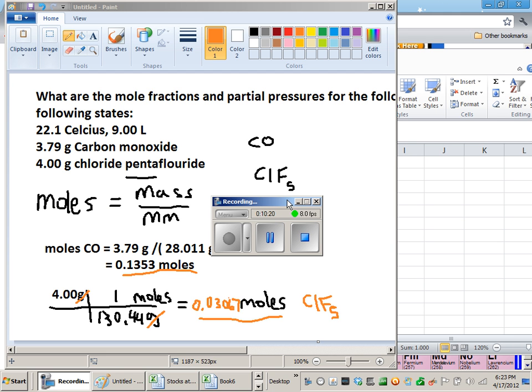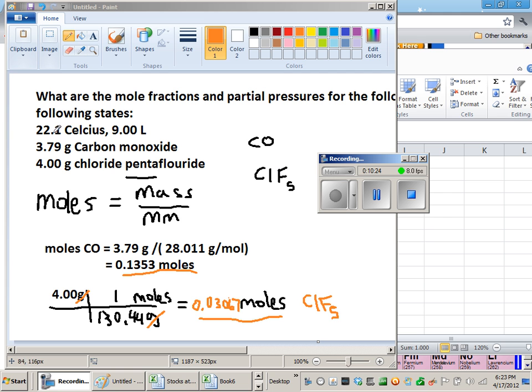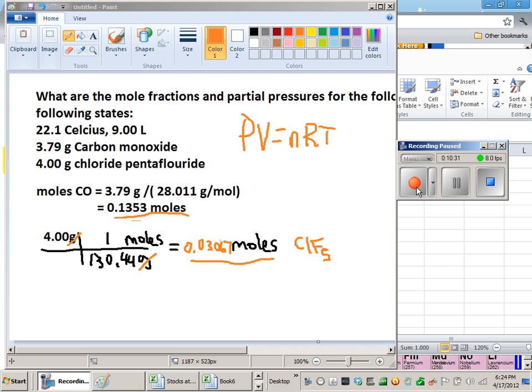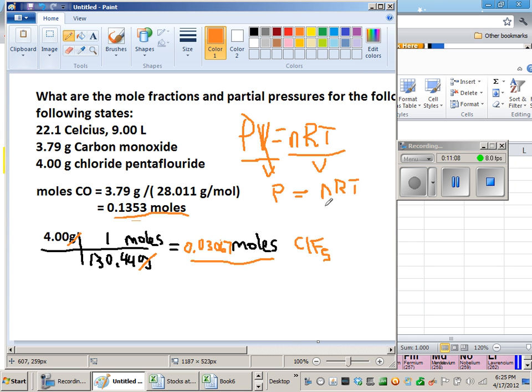More interesting than mole fractions would be partial pressures. We can get those directly from the moles and the given temperature and volume using the ideal gas law. So this is the ideal gas law: PV equals nRT. We're asked to find the pressures of each of these gases given the number of moles we just calculated. First we'll solve for P. To solve for P, I need to divide both sides of this equation by V, the volume. So I'm getting P equals nRT over V.